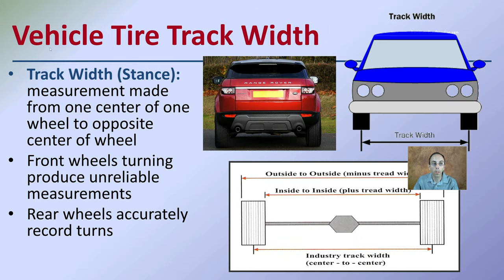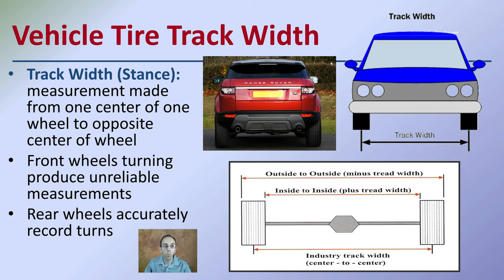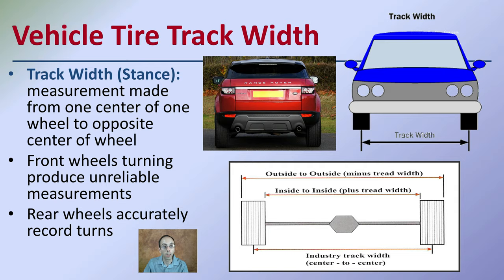The vehicle tire width — the stance we're looking at — is called the track width. It's a measurement made from the center of one wheel to the opposite center of the other wheel. The front wheels turning produce unreliable measurements, so rear wheels accurately record turns because they remain always consistent. Looking at the track width for the rear tires is the measurement we want to determine.